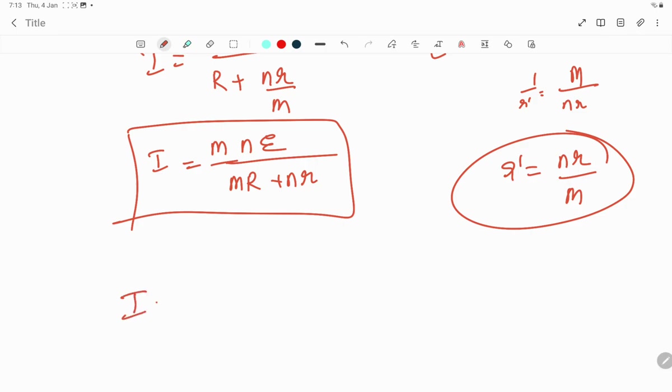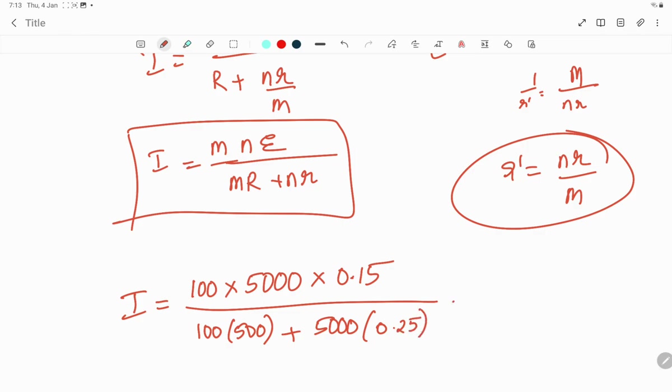Let's substitute the values: m = 100 rows, n = 5000 cells, each ε = 0.15 volts. In the denominator: 100 × 500 (external resistance) plus 5000 × 0.25 ohms.